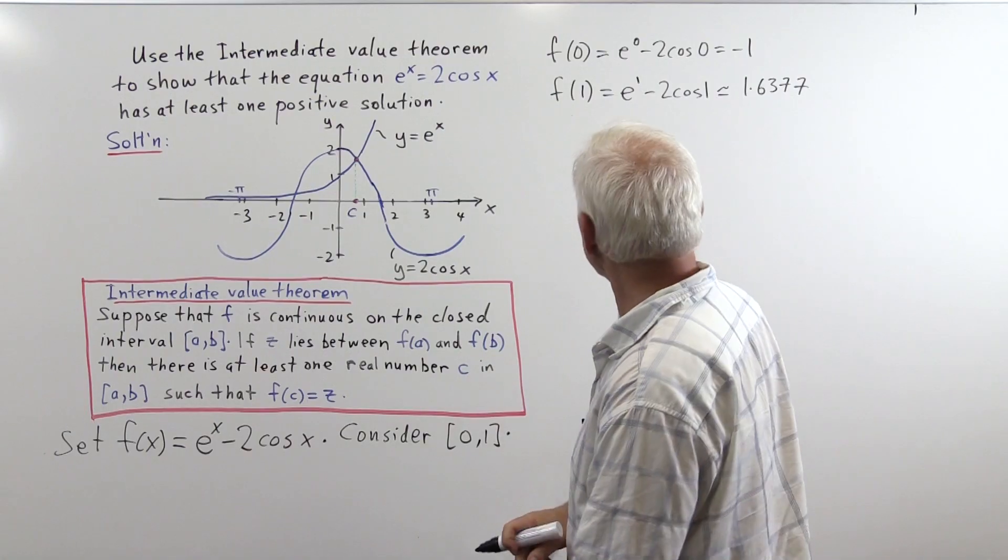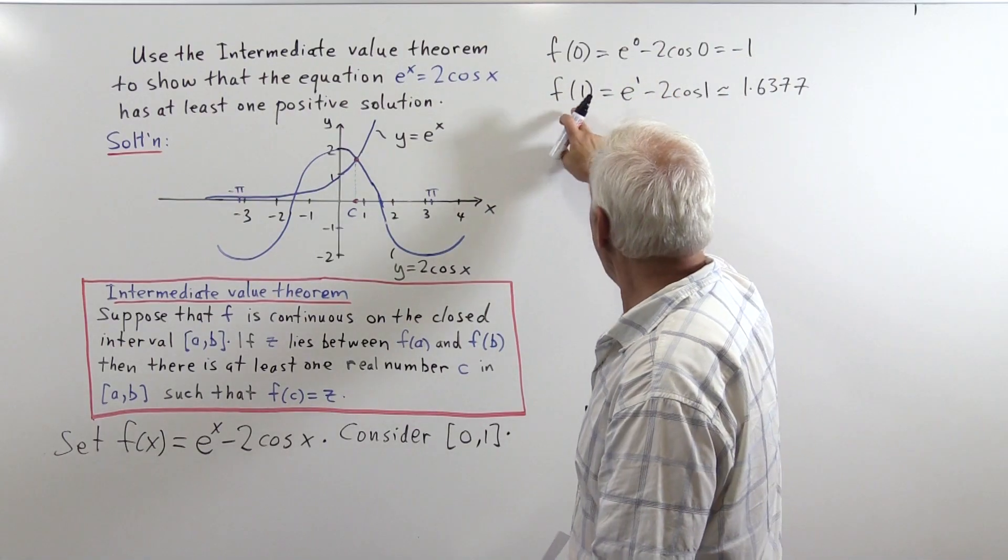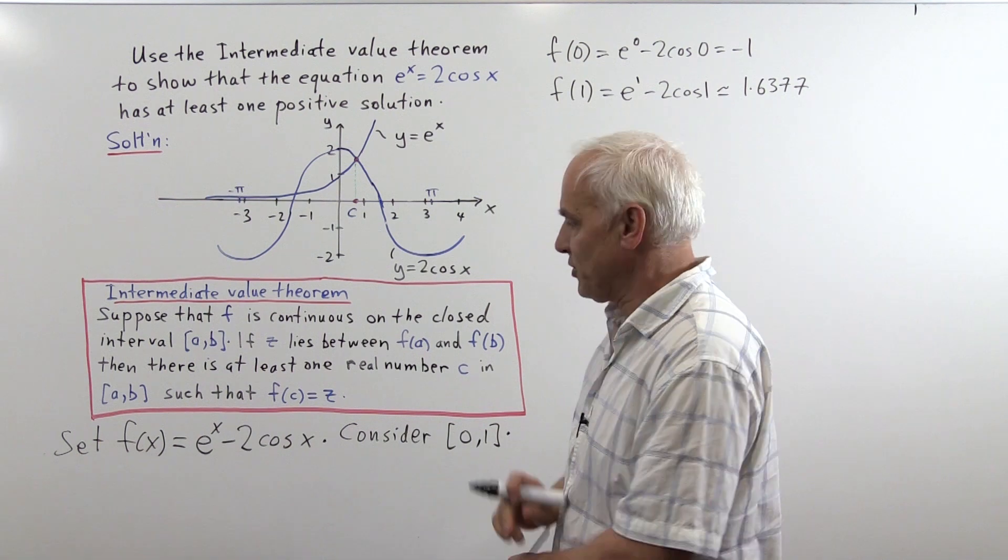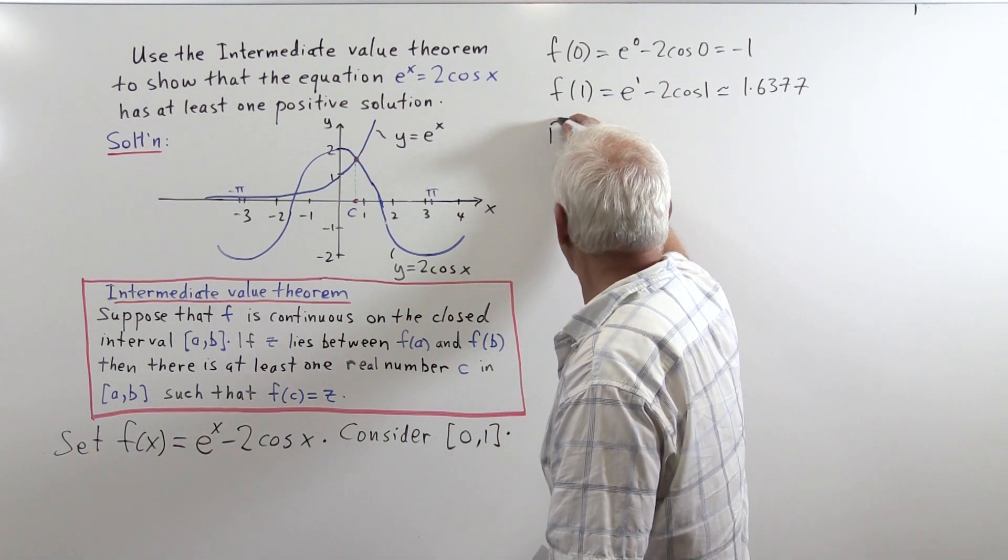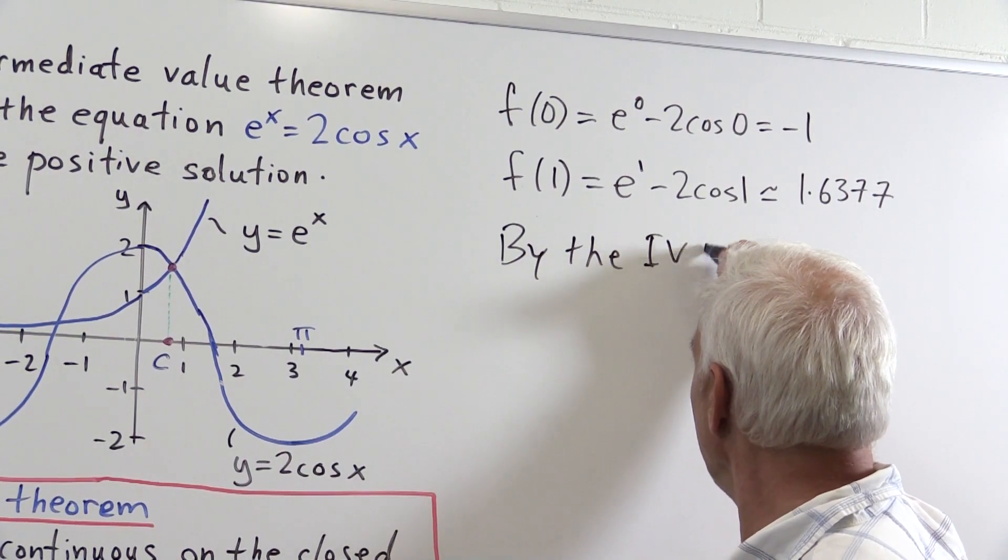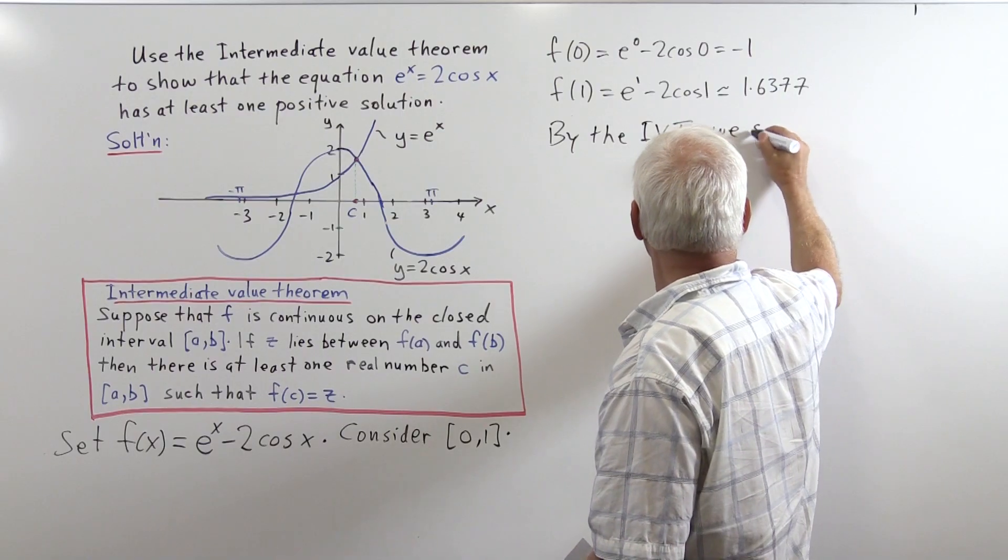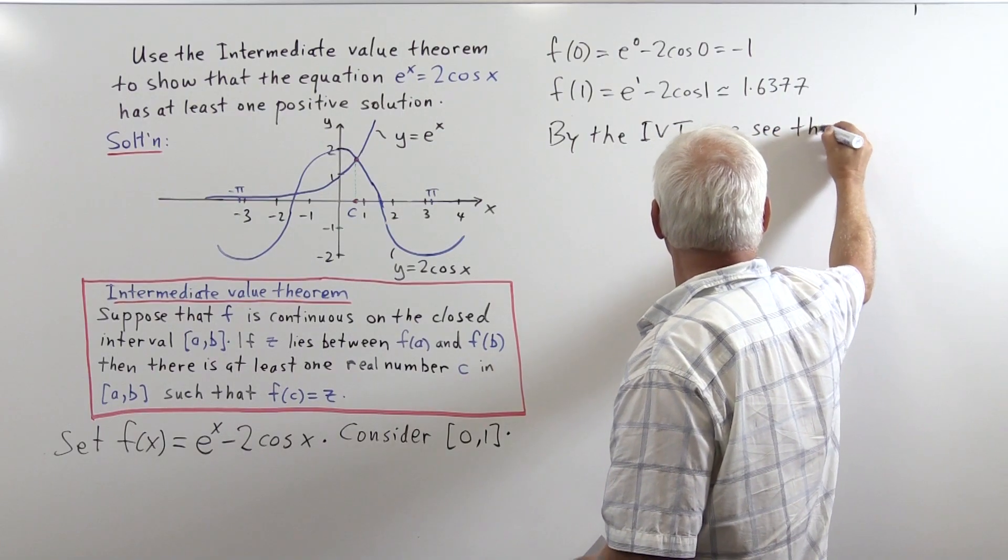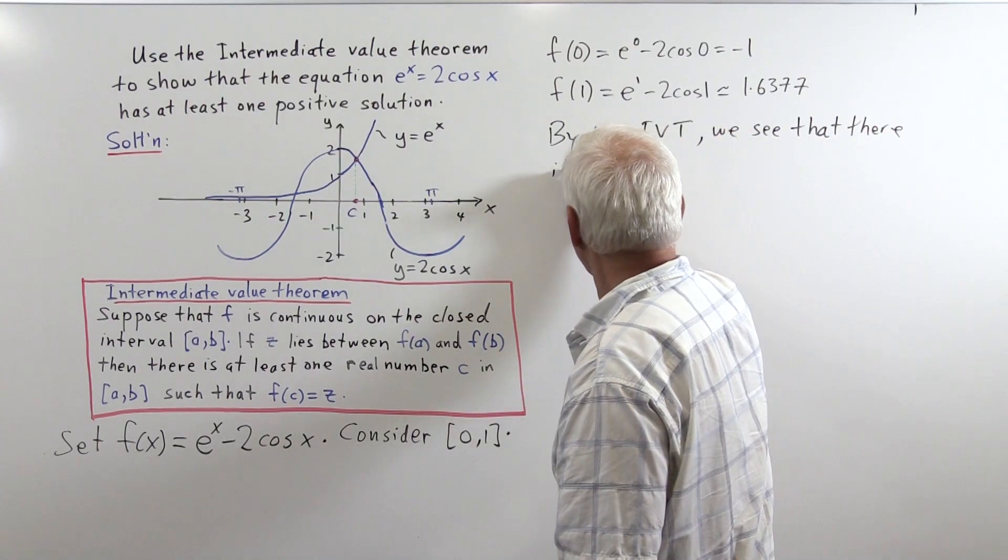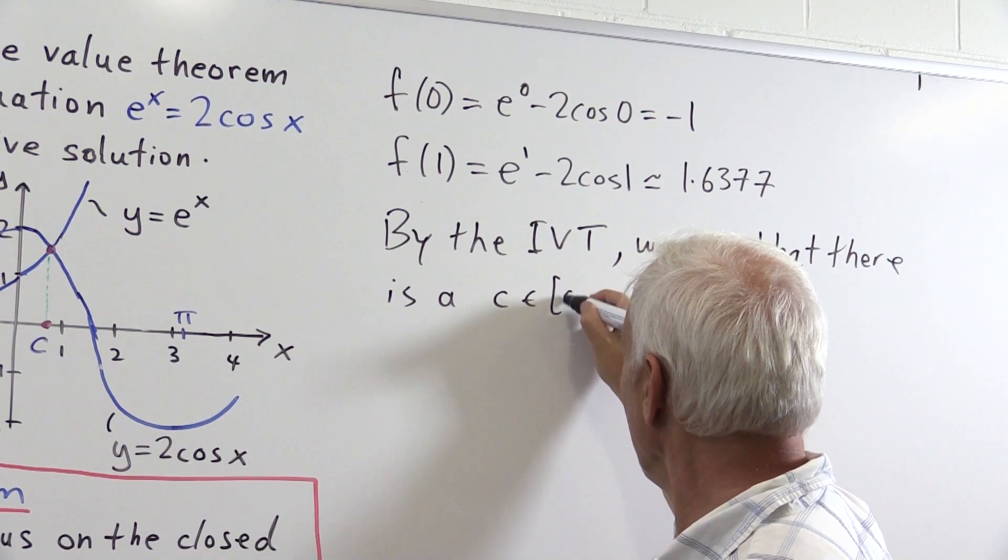So this is a very good interval because f at 0 is negative and f of 1 is positive. So by the Intermediate Value Theorem, we conclude that there is a number c in [0, 1].